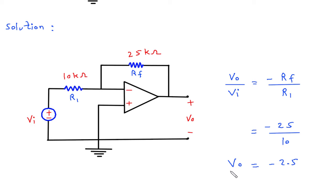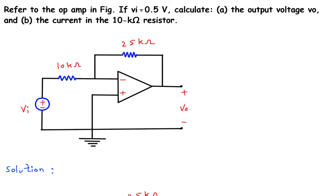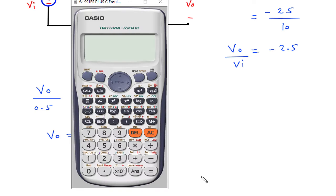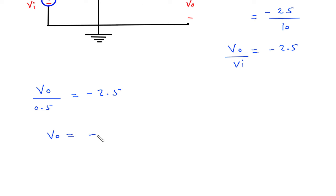This is the value of Vo by Vi. Now Vi is given, which is 0.5 V. So Vo divided by 0.5 is equal to minus 2.5. Therefore Vo is equal to minus 2.5 into 0.5, which gives minus 1.25 V. So minus 1.25 V is the value of Vo.